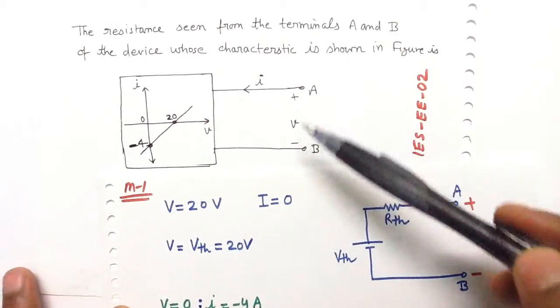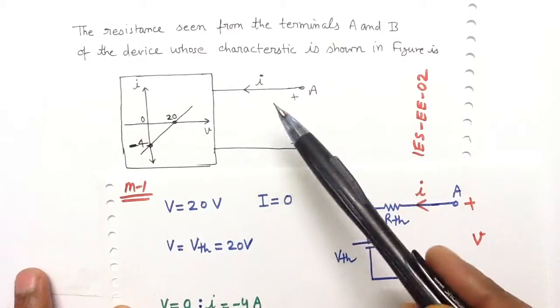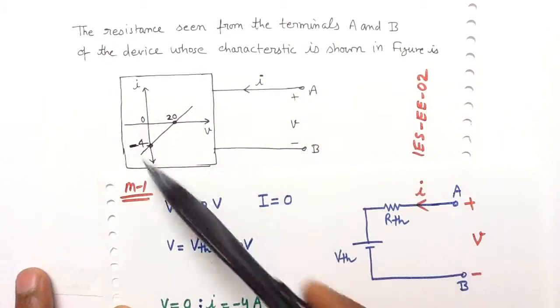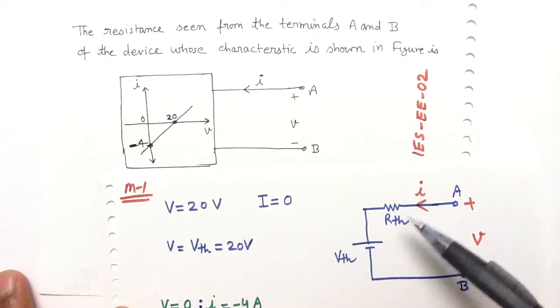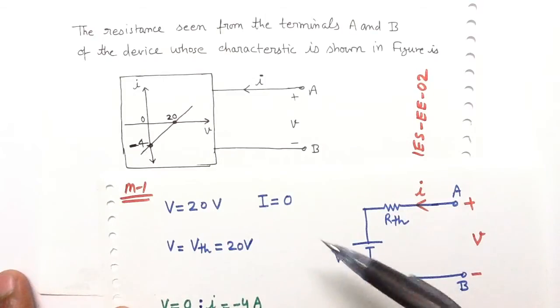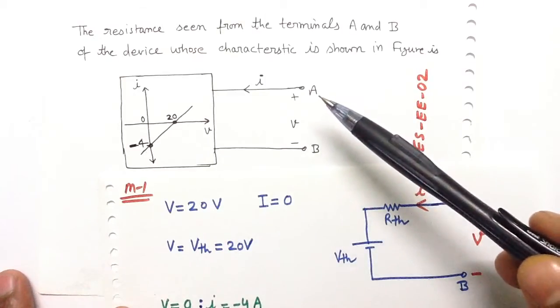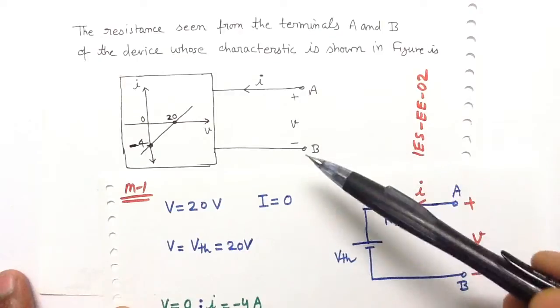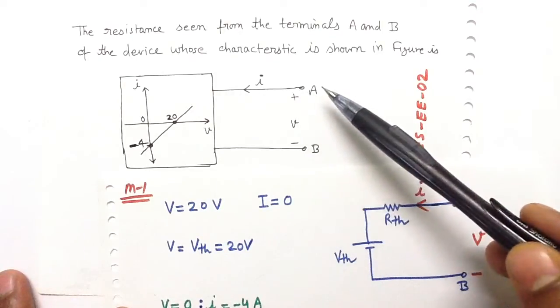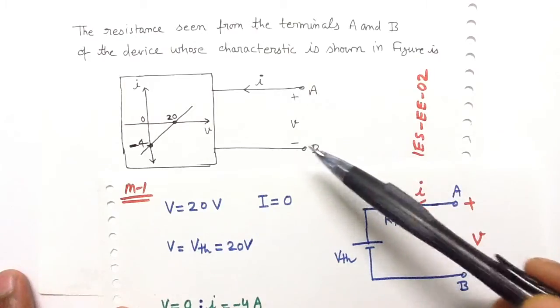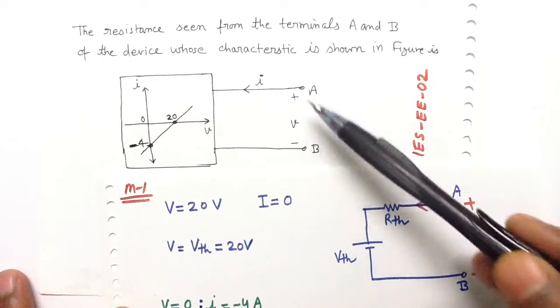For points A and B, I have drawn the Thevenin's equivalent VTH and RTH. The reference voltage polarity is the same as given in the question: plus point A and minus point B. I have not changed the reference polarity.